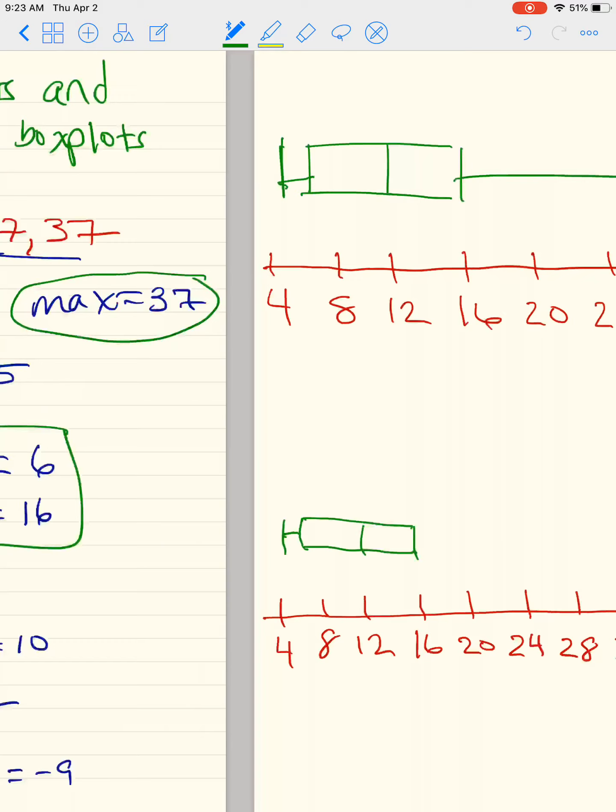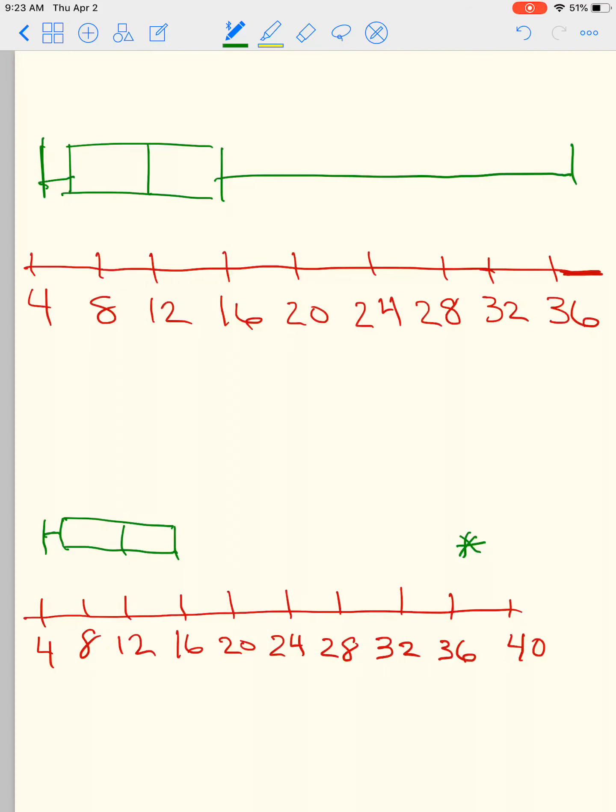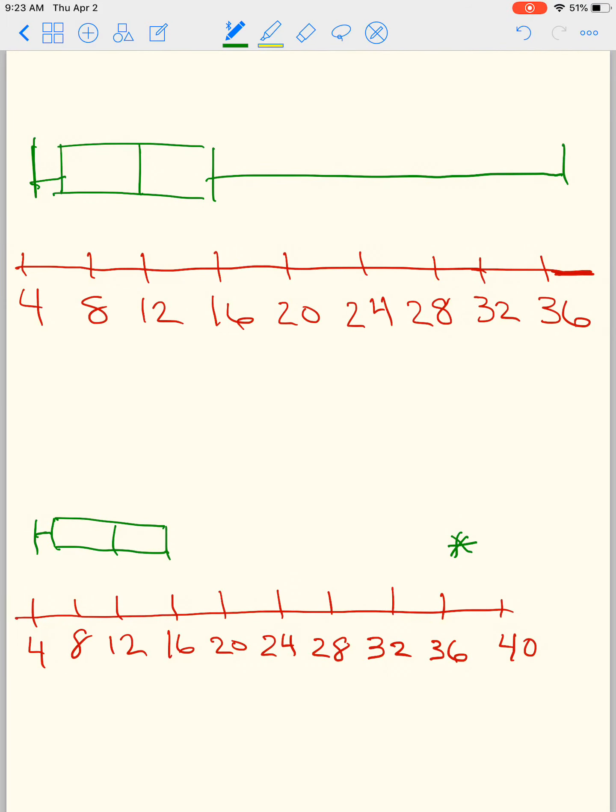So I go back to my data, and I find the highest number, the highest number below 31. And that happens to be 17. So my new whisker is going to be 17, my new max. But I don't want you guys to get confused. The max is still 37. This is what we call a modified box plot. And we just have to give it a new whisker. So that is basically how you find outliers.